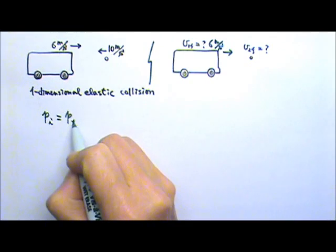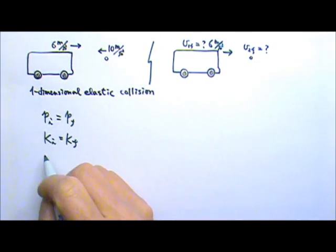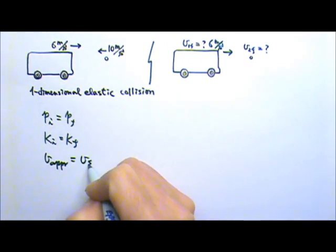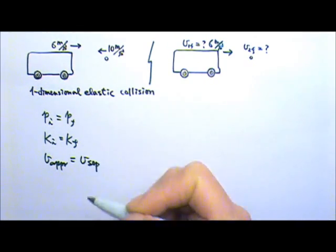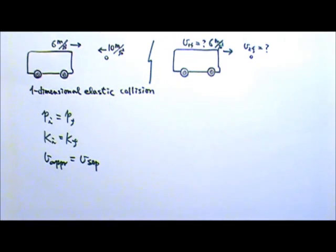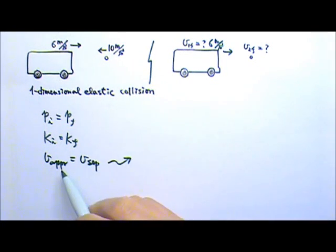We have the momentum conservation, we have the kinetic energy conservation, and we have the approaching speed equals to the separating speed. Which one do you think you can use if there is no mass given? Of course, the last one. This is the only one that does not require a mass.